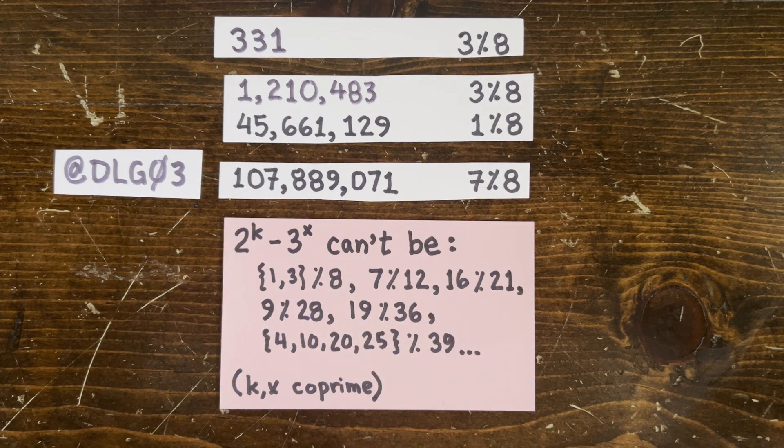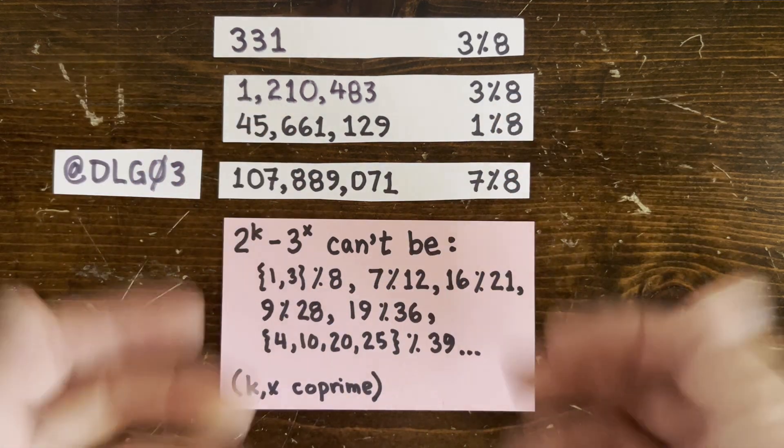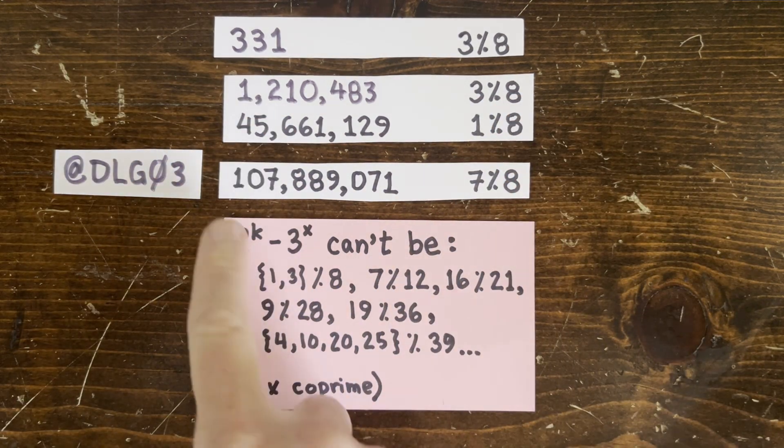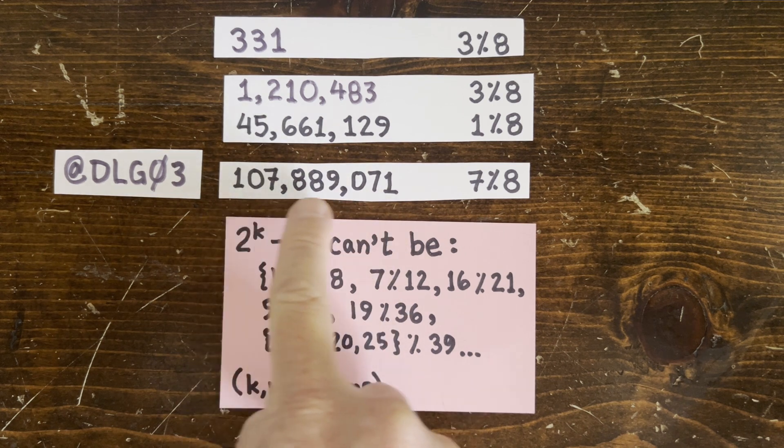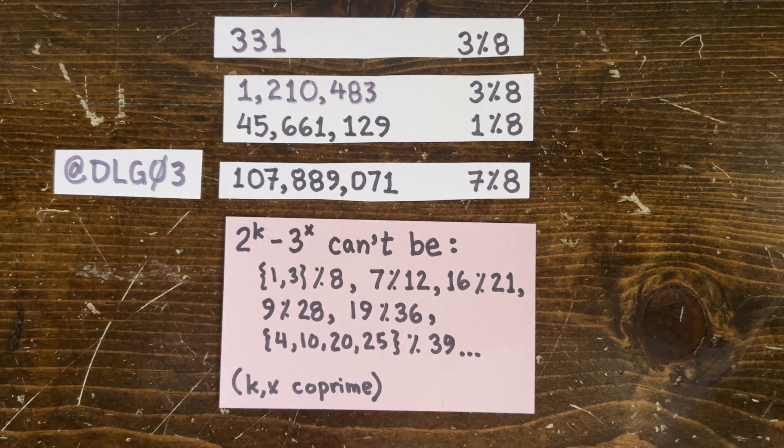And here are a bunch of other things that 2 to the k minus 3 to the x can't be. But the fourth Kershaw prime doesn't fall into any of these categories. So is there any succinct reason why it can't be characterized by 2 to the k minus 3 to the x? Or maybe it can be.